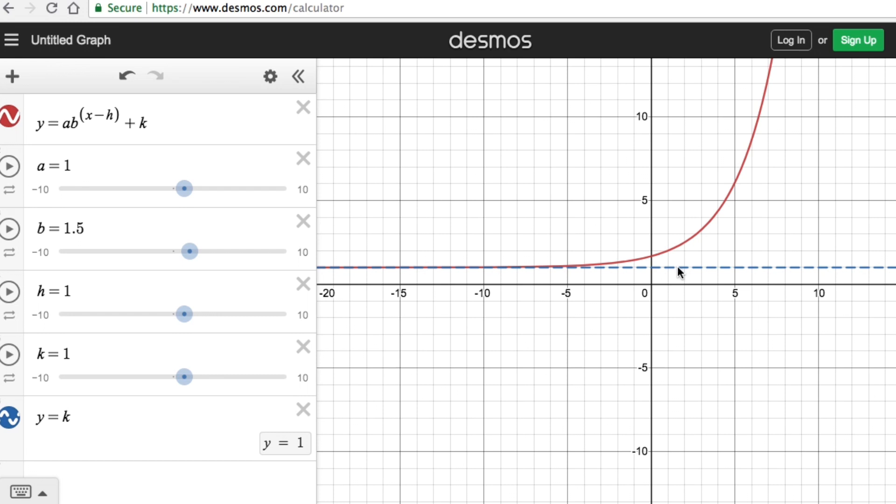Again, we remember that an asymptote is a line where the graph approaches towards it but will never touch it. It just gets closer and closer to it.